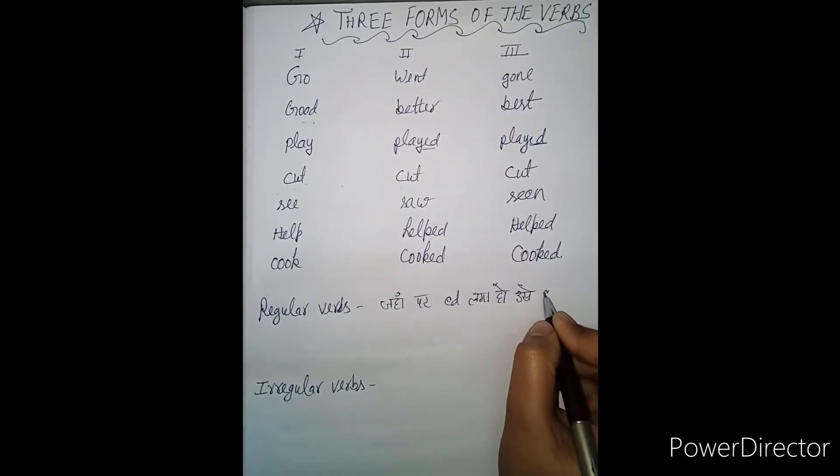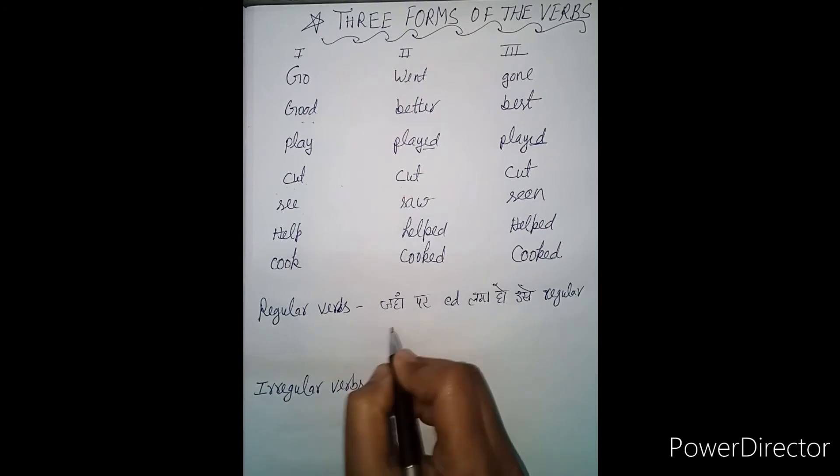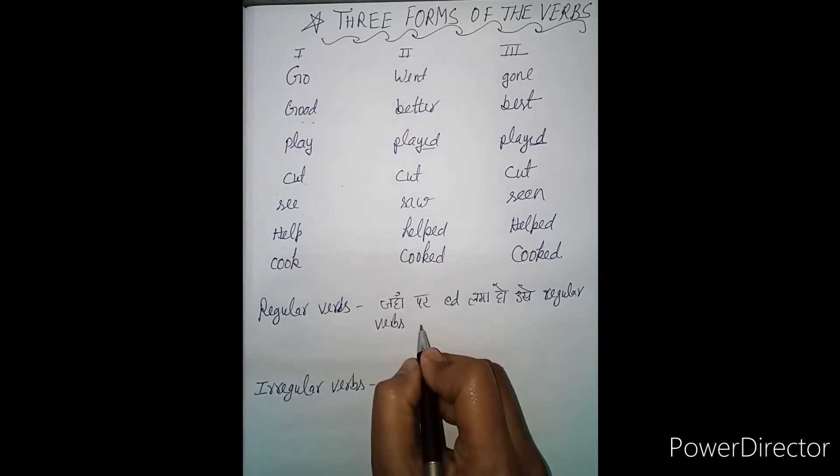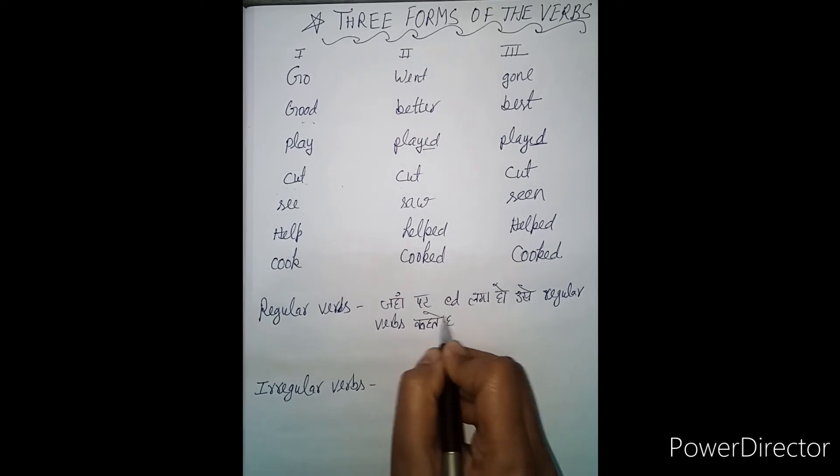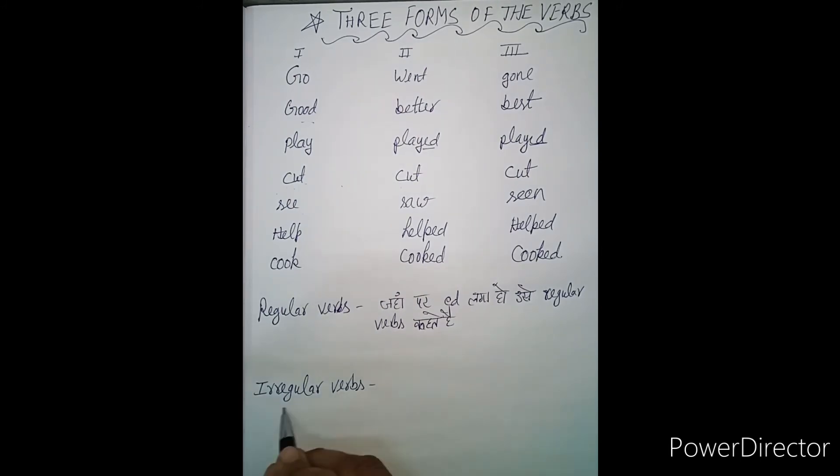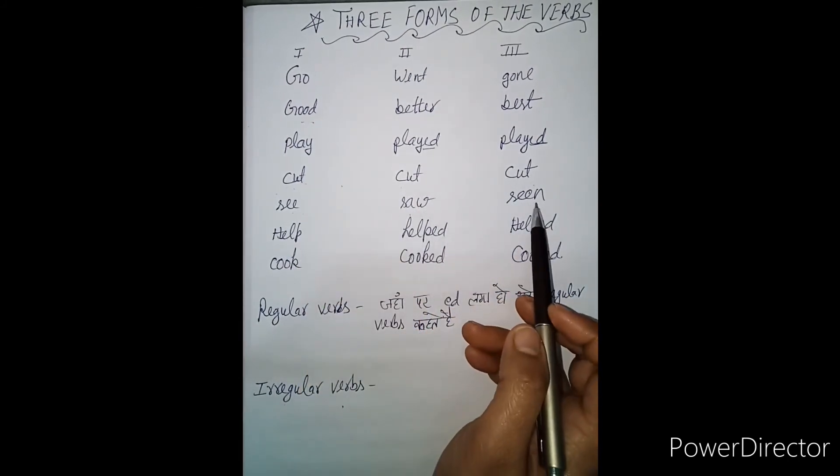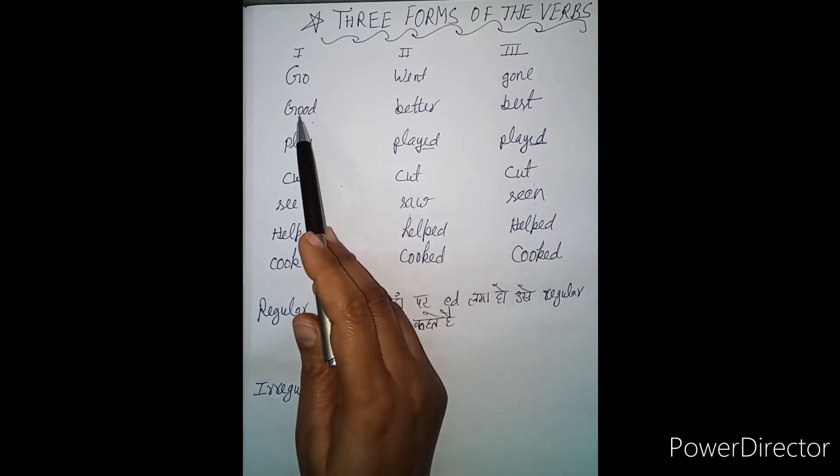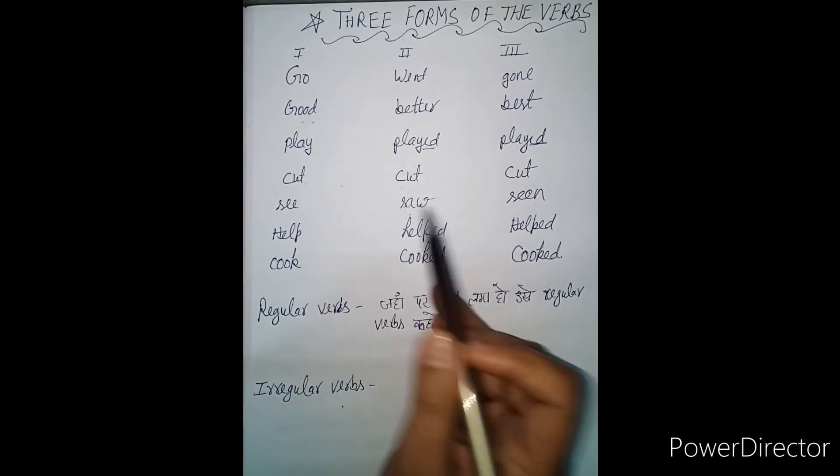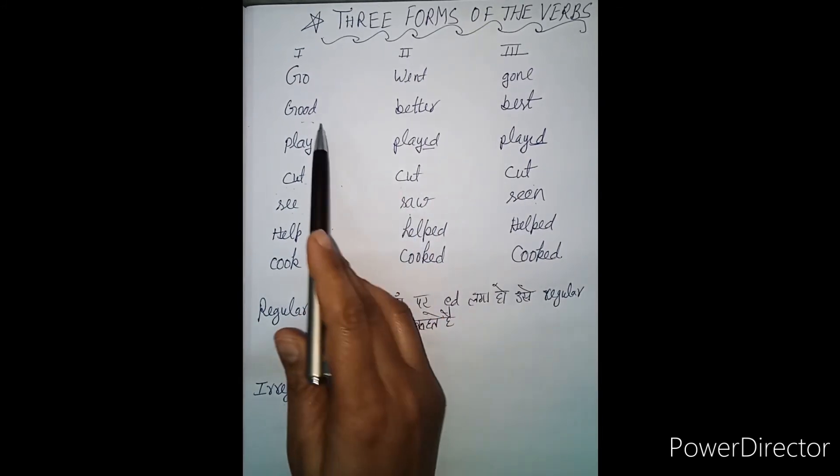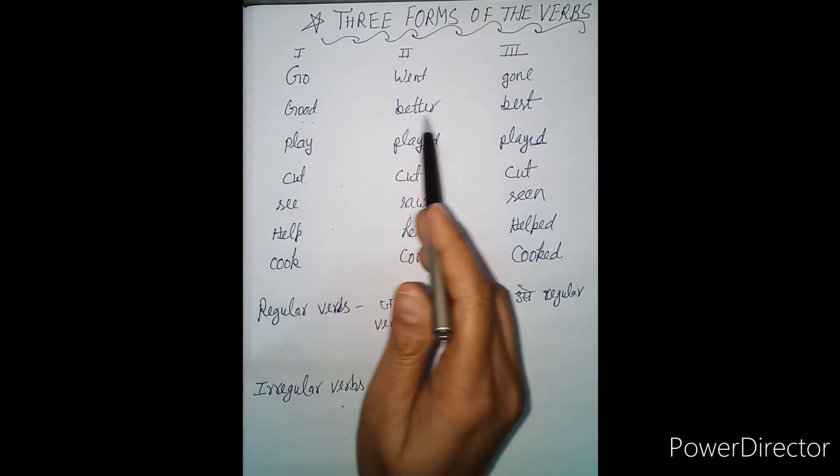These are called regular verbs. Regular verbs are those where -ed is added. And where -ed is not added, those are irregular verbs. Only a few are irregular verbs, which we have to memorize.